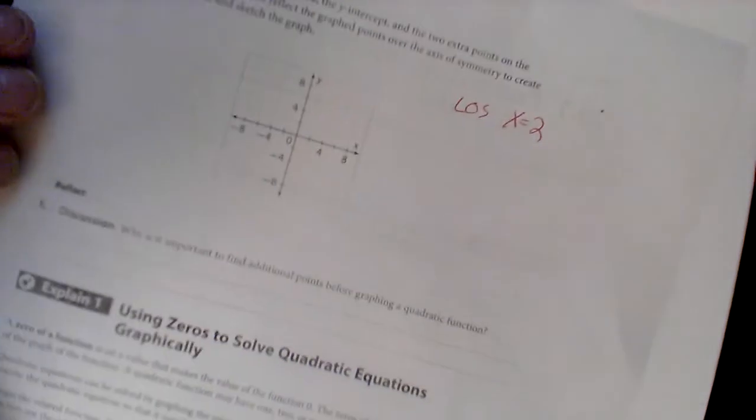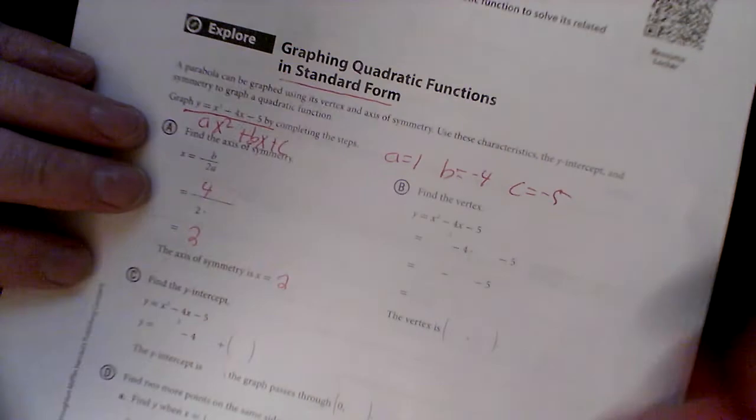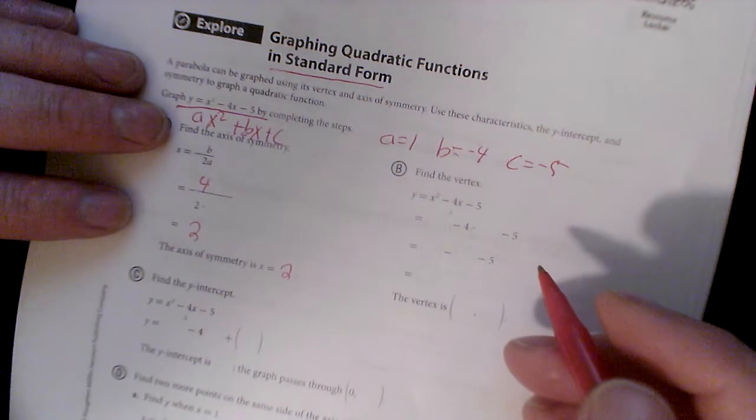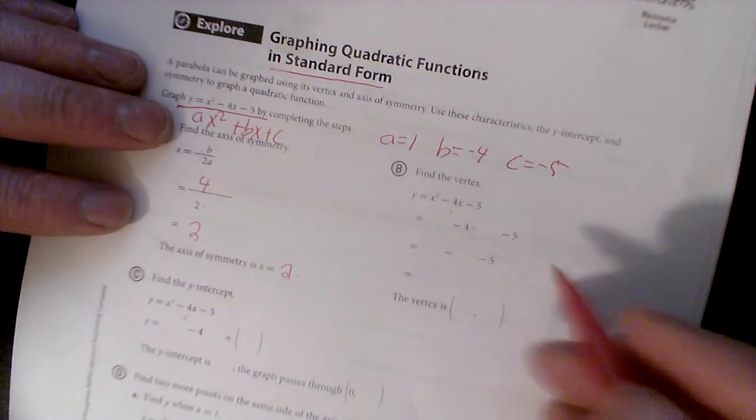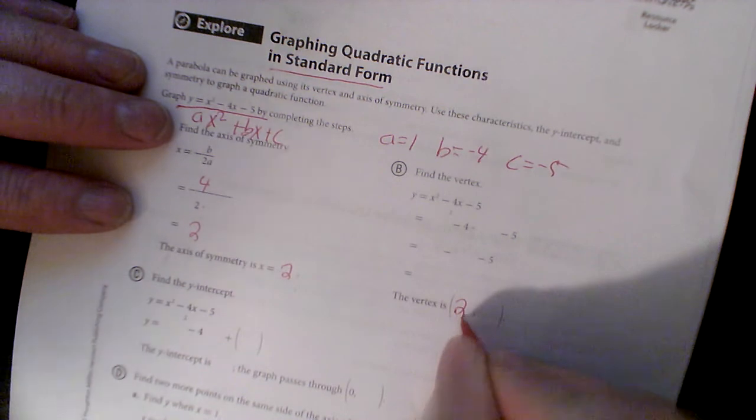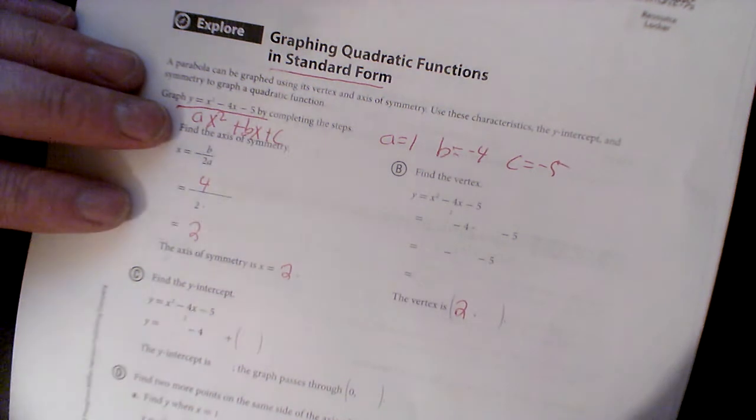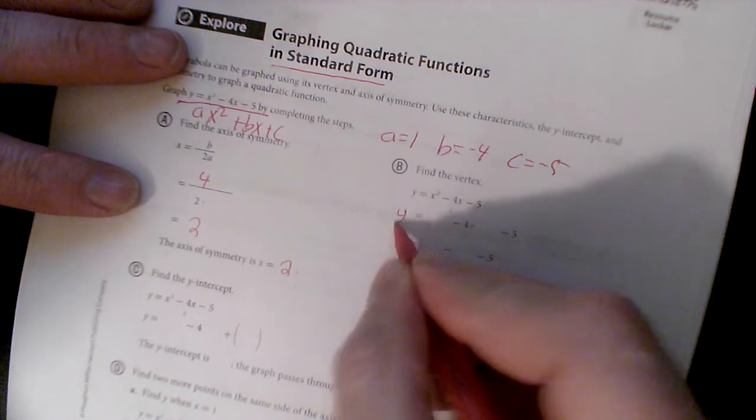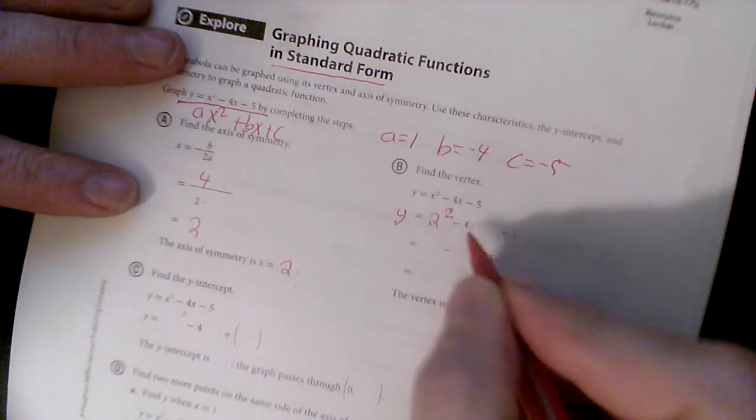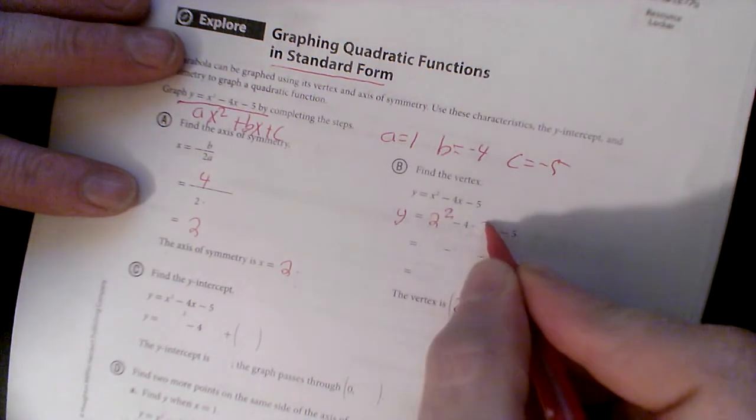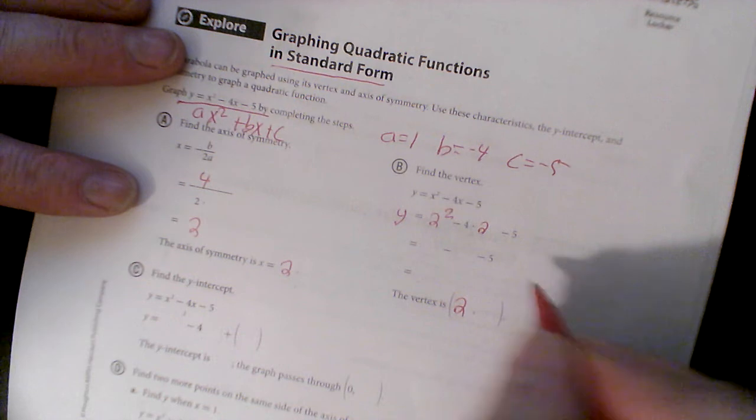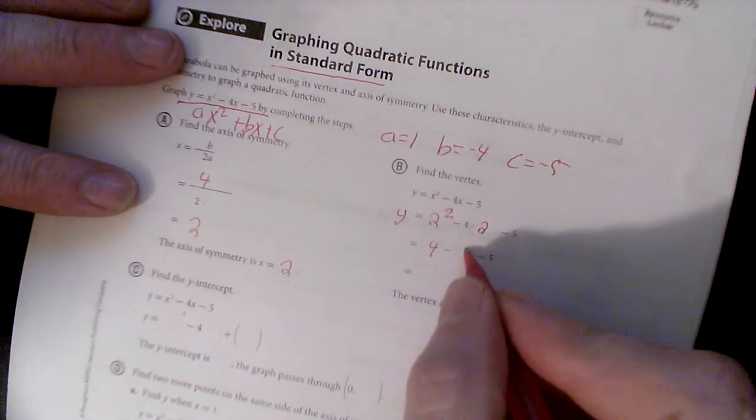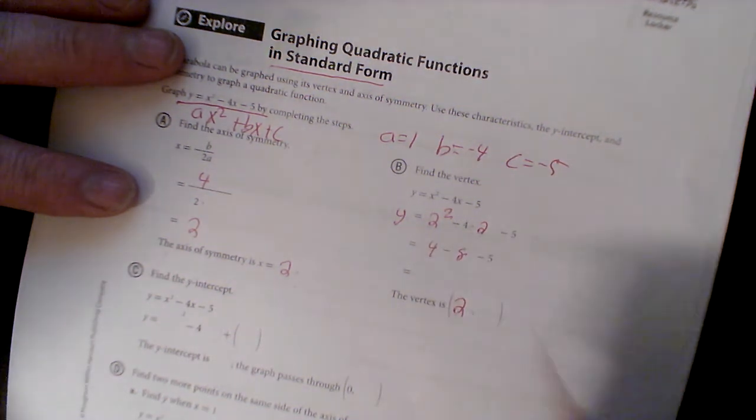All right, I'm gonna come over here and say line of symmetry x equals 2 so when we graph it we'll get it graphed pretty quick. Now then we find the vertex. Well, the vertex happens to be on the line of symmetry, so I know my vertex has an x value of 2. All I do is plug in my 2 into x, so that's y equals 2 squared minus 4 times 2 minus 5.